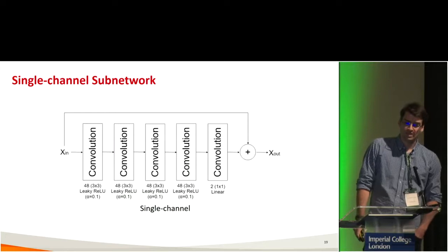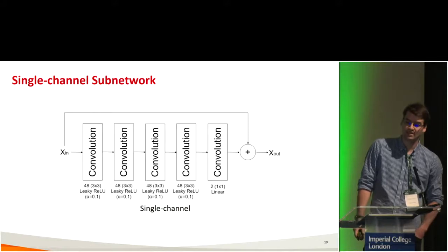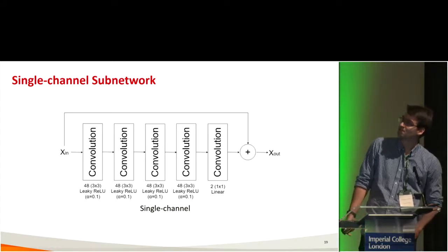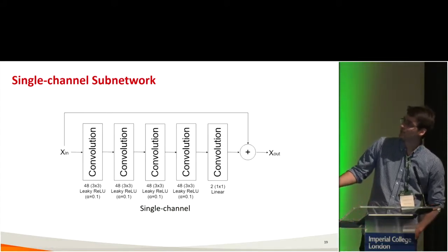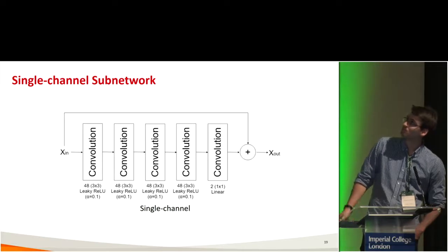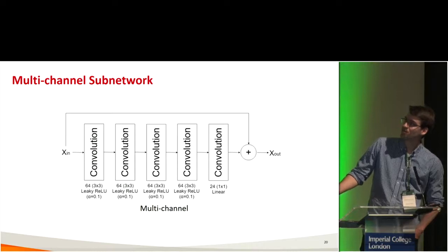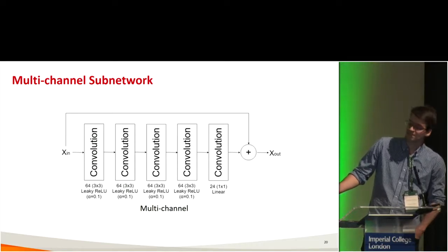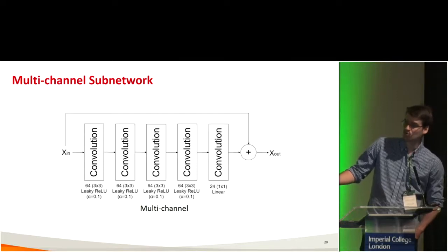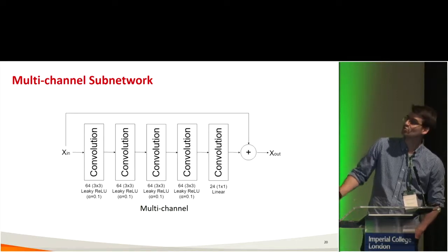The single-channel subnetwork architecture is simple: five convolutional layers with 48 filters in the first four layers, and the last layer returns to the number of input channels. For the multi-channel case, I added more filters per layer. Since I'm working with 12-channel data, the output returns to 24 channels — real and imaginary times 12 equals 24 channels.